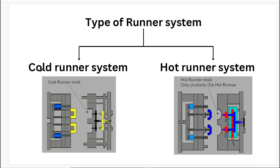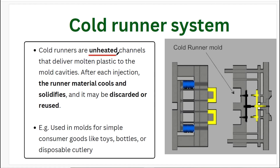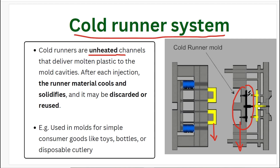There are two types: the cold runner system and the hot runner system. Cold runner systems use unheated channels — the runner is unheated. During the cooling and solidification process of the part, the runner also cools and solidifies. We then need to remove the part and remove the runner as well, and in the cold runner system this runner is scrapped.